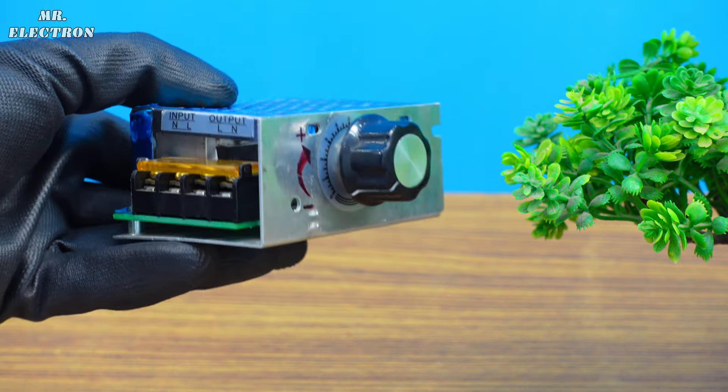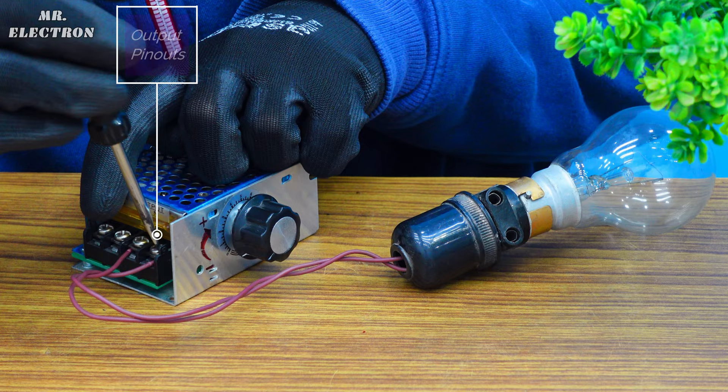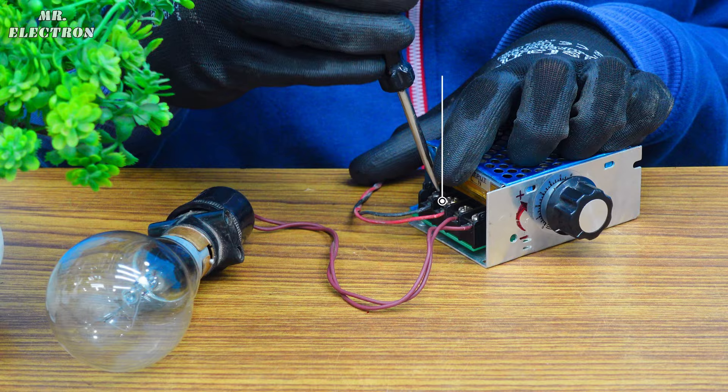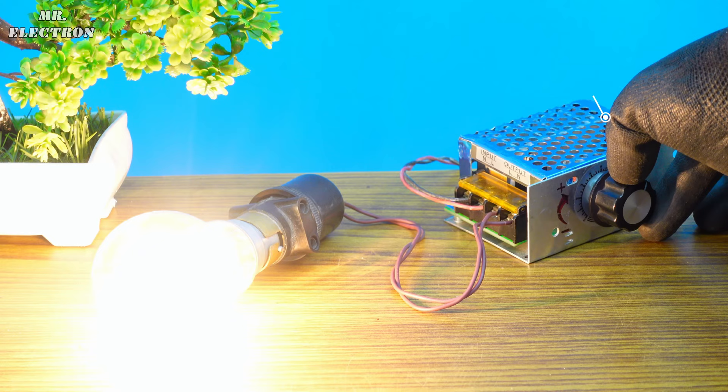This is a 4kW dimmer circuit. If I connect a bulb to its output pinouts and a 220V AC source to the input pinouts, then even after turning on the switch, there is no brightness regulation, which means it is damaged.